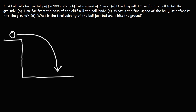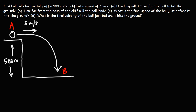How long will it take for the ball to hit the ground? What I like to do is define the positions of interest. We'll call this position A, which is the initial position, and position B, the final position. We know the height of the cliff is 500 meters, and we know the ball has a horizontal speed of 5 meters per second. So with this information, how can we find the time it's going to take for the ball to go from position A to position B?